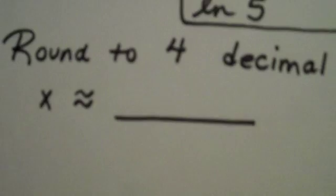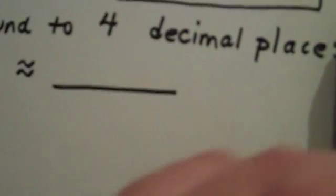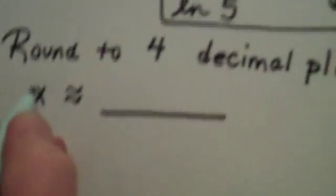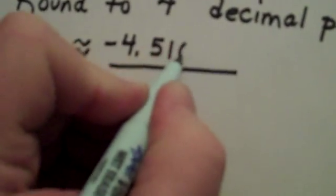When I read off my calculator, since I'm asked to round to four decimal places, I actually have to look out to the fifth. So x is approximately negative 4.5101.